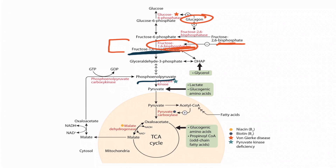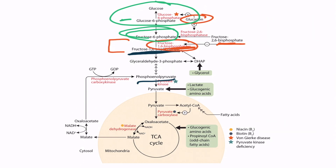Therefore, the activity of fructose-1,6-bisphosphatase is increased, allowing fructose-1,6-bisphosphate to be converted into fructose-6-phosphate. Fructose-6-phosphate is then converted into glucose-6-phosphate. The final irreversible step in gluconeogenesis is when glucose-6-phosphate is converted into glucose by the enzyme glucose-6-phosphatase. Because gluconeogenesis occurs in the liver and the kidneys, this enzyme is only present in these tissues.